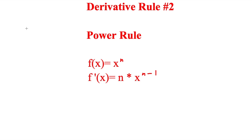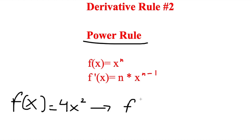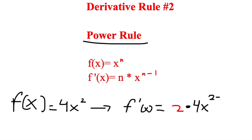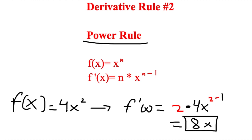The second rule is the power rule. The power rule says that whatever we have as x to its exponent n, the derivative is that we bring down that exponent and then subtract 1 from it. So for example, if we had f of x equal to 4x squared, the derivative f prime equals — we bring the 2 down, so it's 2 times the constant 4, and then x to the 2 minus 1. This gives us f prime equal to 8x, and that is the derivative in this case.